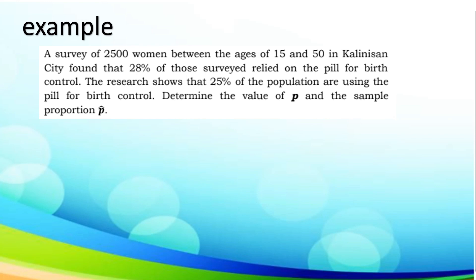Another example. A survey of 2,500 women between ages 15 and 50 in Kalinisan City found that 28% of those surveyed relied on the pill for birth control. The research shows that 25% of the population are using the pill for birth control. Determine the value of p and the sample proportion. Find p: we have 25% of the population. Converting it into decimal we have p equals 0.25. To be able to find the sample proportion or p-hat, we are going to use the formula x over n. Since that is not given and it is already illustrated that 28% of those surveys relied, it is already mentioned. The p-hat or the sample proportion is 0.28.